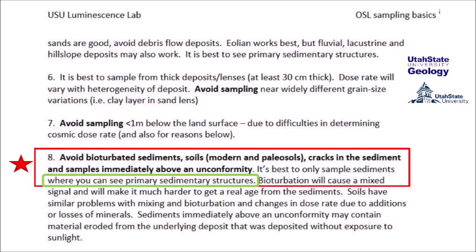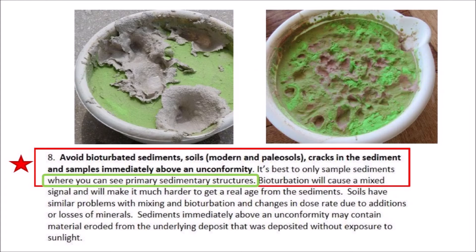Another requirement for OSL sampling is to avoid bioturbated sediments moved by burrowing animals or plant roots. The instructions clearly state that it is best to only sample sediments where primary sedimentary structures are visible. The accuracy of OSL depends on sampling layers of undisturbed soil deposited by sedimentary processes. This also implies that OSL should not be used on soil disturbed by the barrage of impacts that created the Carolina Bays. Unfortunately, the Carolina Bays have been dated by OSL as if they were sedimentary structures, producing a wide range of invalid dates used to argue that the bays did not form contemporaneously.